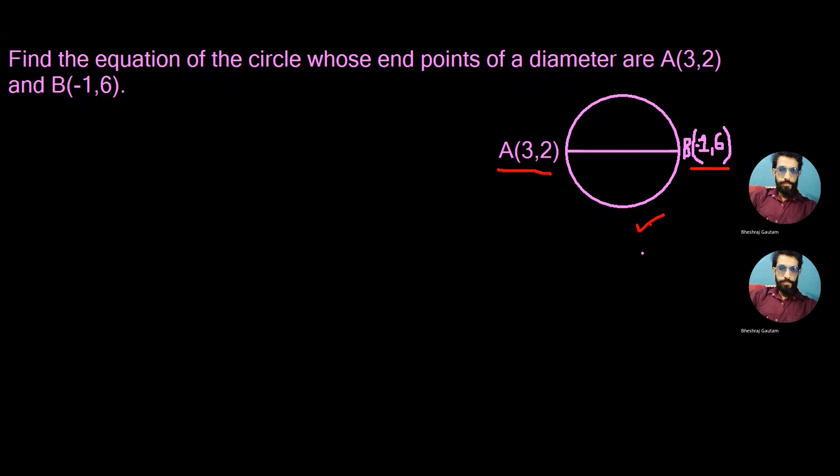Let me tell you that when two endpoints of a diameter are given there is a direct formula we can apply to find the equation. The formula is (x-x₁)(x-x₂)+(y-y₁)(y-y₂)=0.